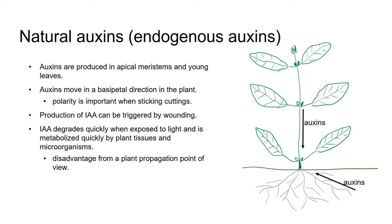Natural auxins are produced in apical meristems of both shoots and roots and in young leaves, and they move in a basipetal direction in the plant, meaning they move towards the crown of the plant. In the aerial parts of the plant, this means auxins are generally moving in a more or less downward direction. In the roots, it means they are generally moving in a more or less upwards direction.